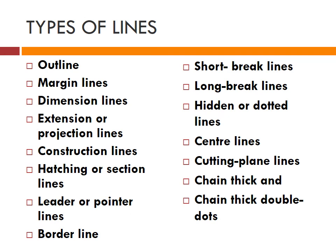Now let's see the types of lines. Outline is the line drawn to represent visible edges and surface boundaries of an object. Margin line is a continuous thick or wide line along which prints are trimmed. Dimension lines are continuous thin lines terminated at outer ends by pointed arrowheads. Extension or projection lines are also continuous thin lines that extend about 3mm beyond dimension lines. Construction lines are drawn for constructing figures and are shown in geometrical drawings only. Hatching or section lines are drawn to make sections evident — they are continuous thin lines drawn at an angle of 45 degrees.